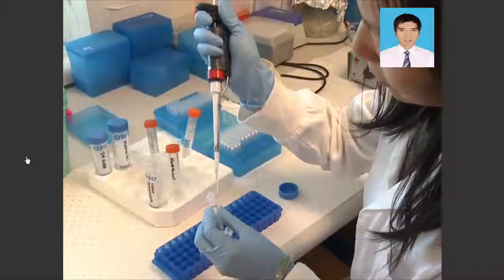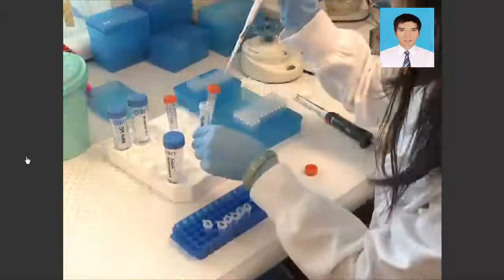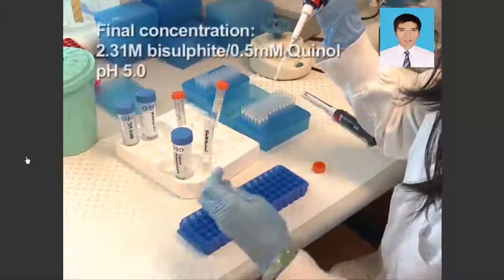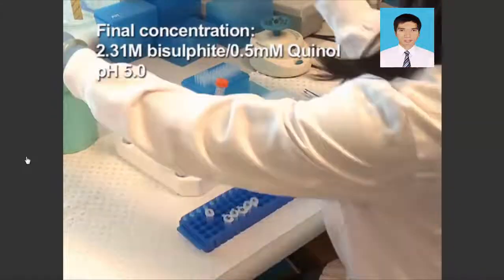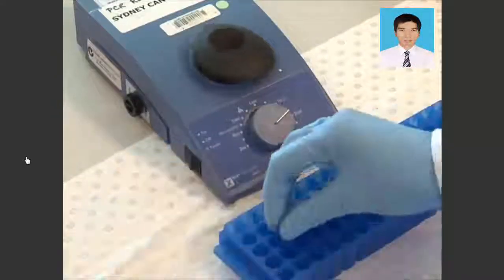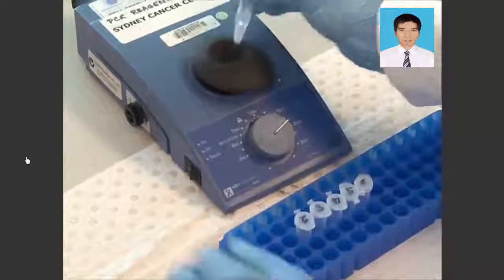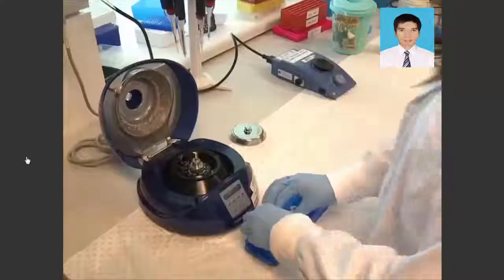Add the sodium metabisulfite and quinol to the denatured DNA in a final volume of 240 microliters. Vortex the tubes and centrifuge for 10 seconds to ensure all of the droplets are at the bottom of the tube.